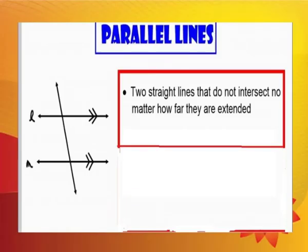Next, parallel lines: two straight lines that do not intersect are called parallel lines. Any two lines that do not meet each other at any point are called parallel lines. In this figure, lines L and M do not meet at any point, so L and M are parallel lines.